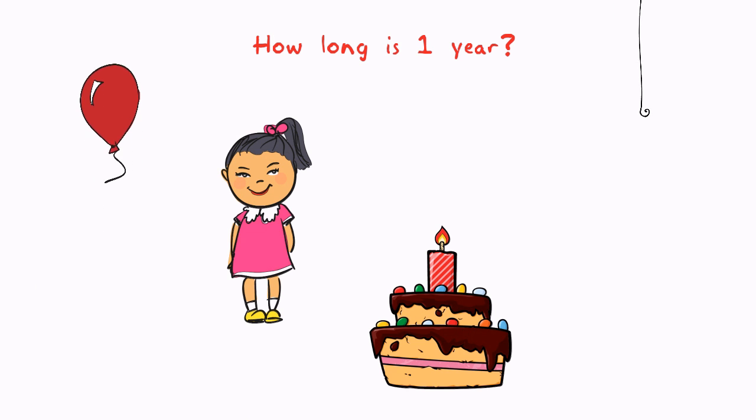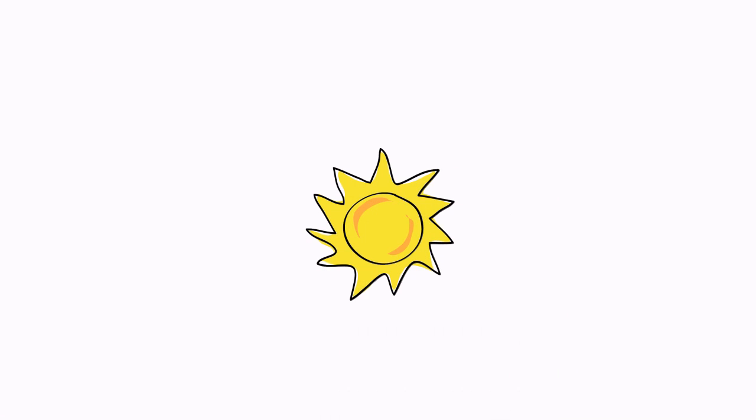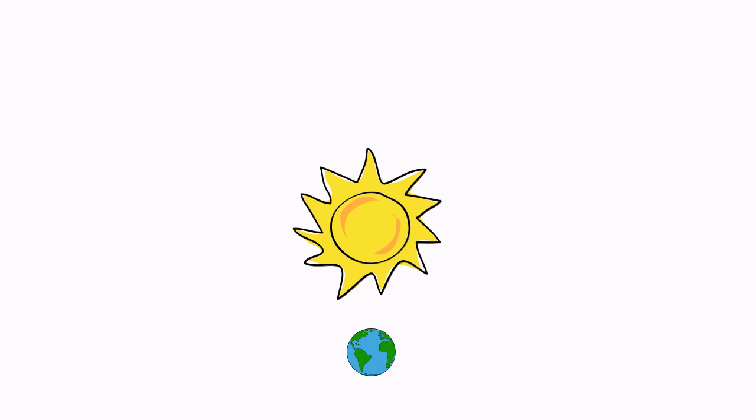Maybe a better definition would be the time it takes the Earth to make one complete orbit around the sun. A calendar year is made of 365 days.